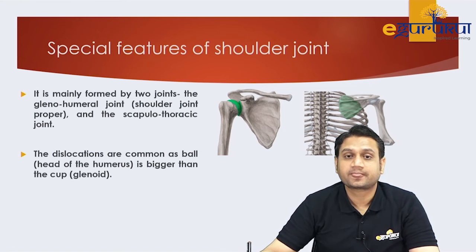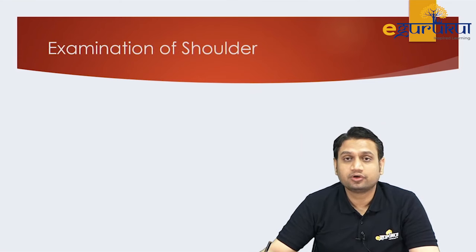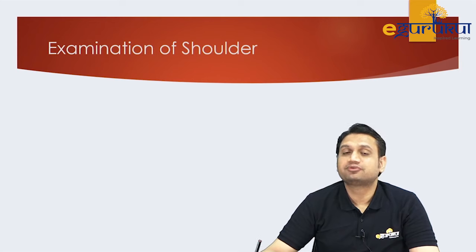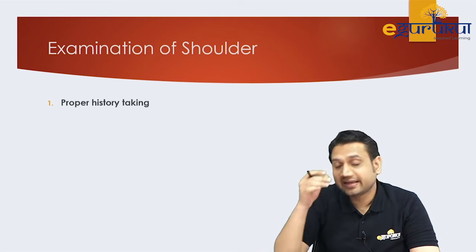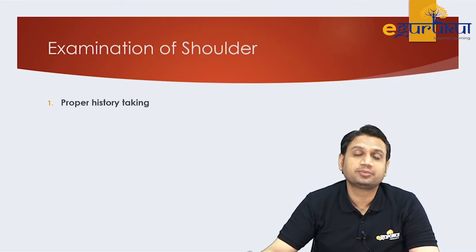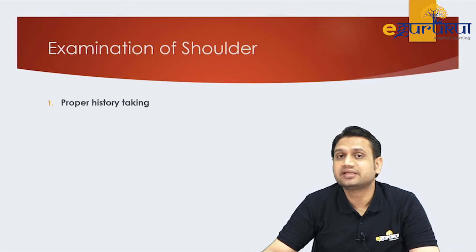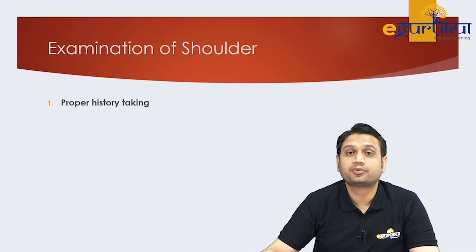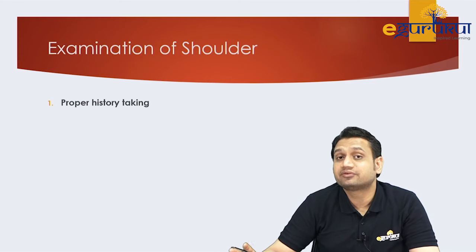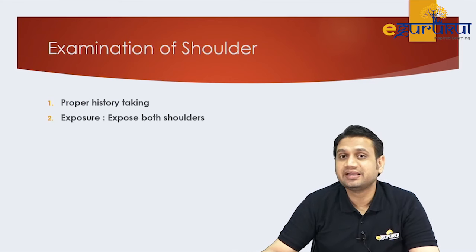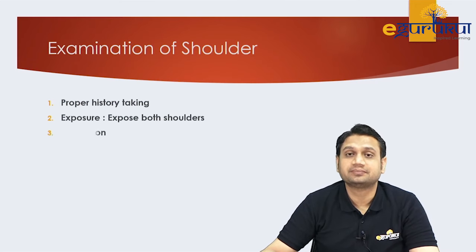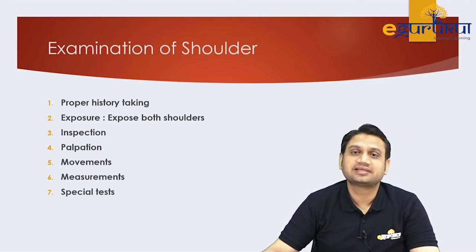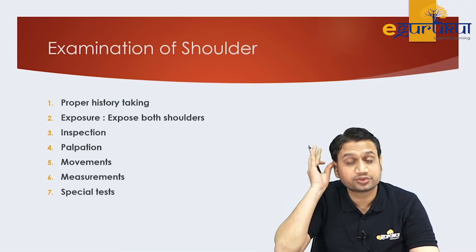What are the problems a patient can present with, and what are the different steps of shoulder examination? First, like any other joint, proper history taking is essential — it can give you the clinical or differential diagnosis in 70 to 80 percent of cases. Second, expose both shoulders for comparison. Third, proceed through inspection, palpation, movements, measurements, and special tests — these seven steps form the shoulder examination.